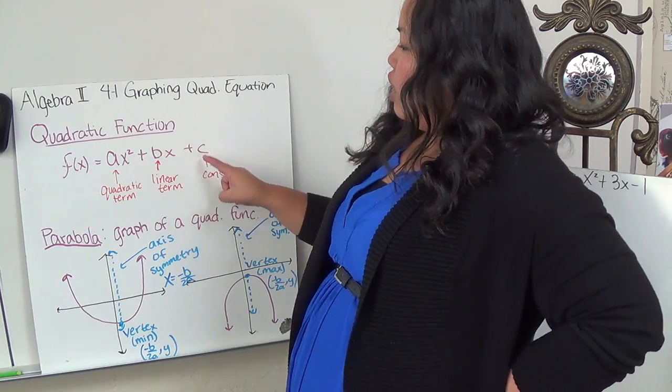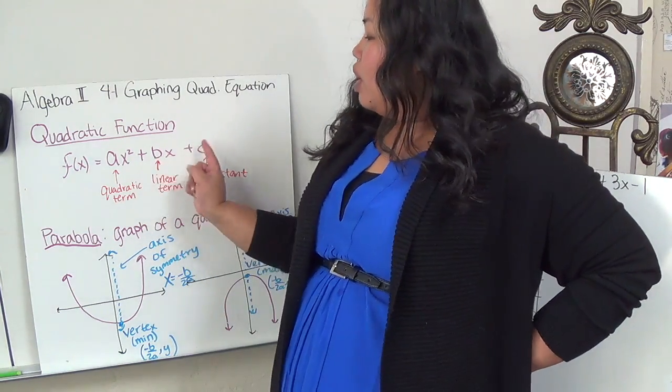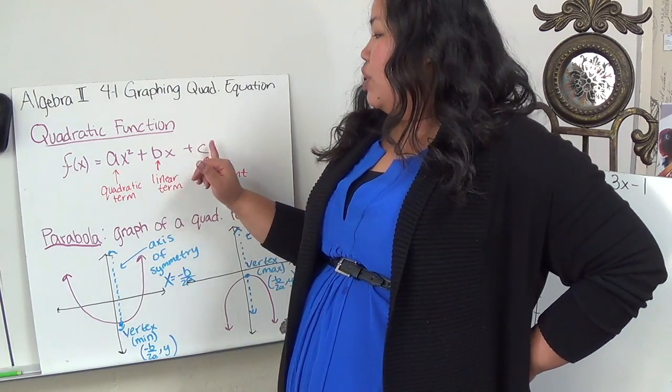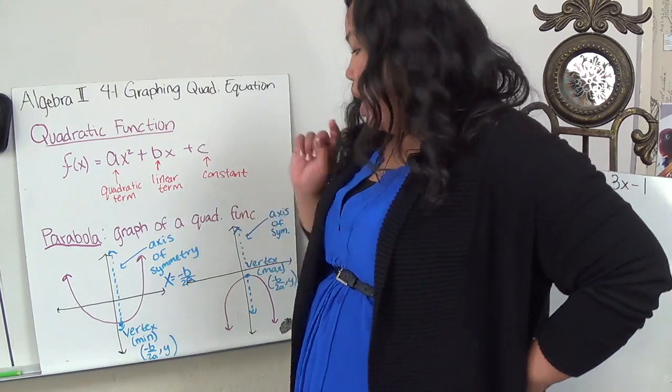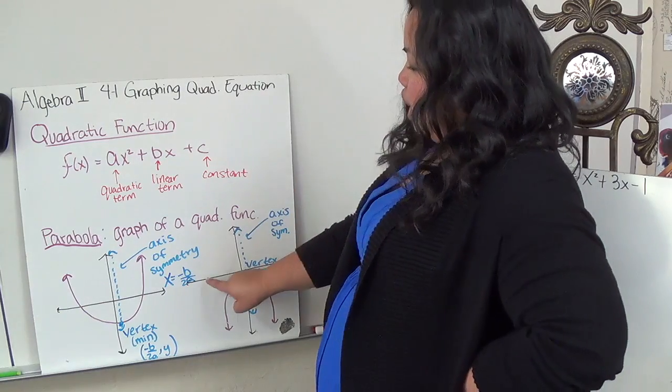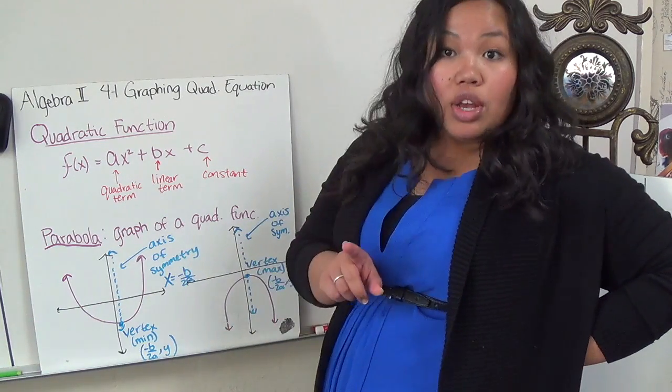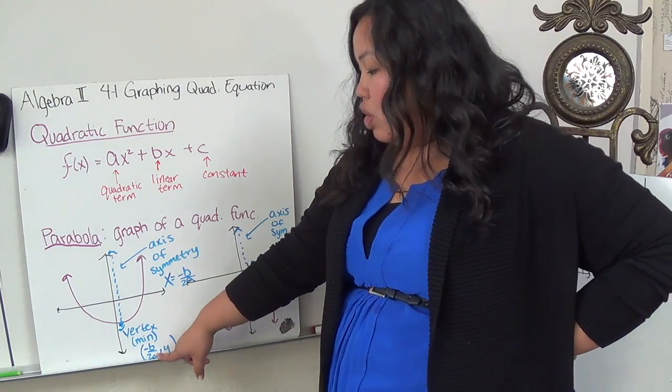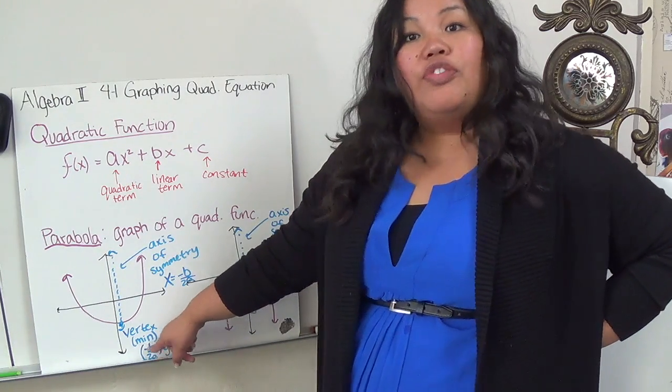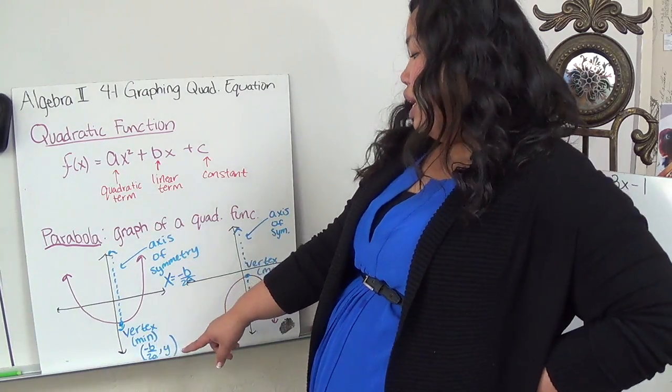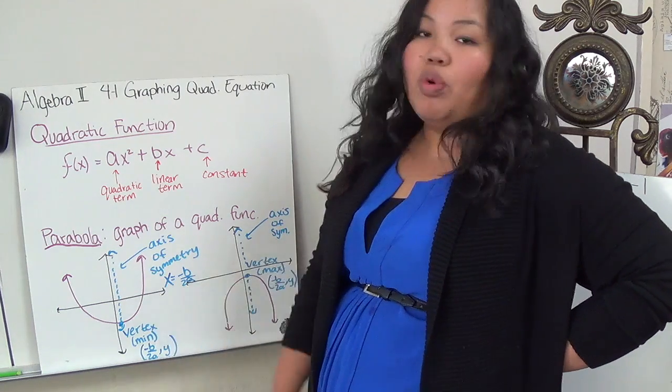So the equation that you need to know is x equals negative b over 2a. So you find these letters right here. If these letters are missing, like a b or c, then you just put 0 in for it. So you plug it into this equation, and this gives you both the axis of symmetry and also the x in your vertex. And once you find the x, then you can plug in the x to find the y, and you'll have the point of your vertex.